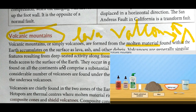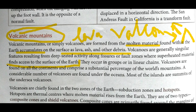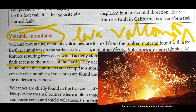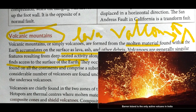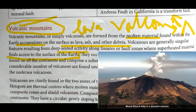Volcanoes are generally a feature resulting from deep-seated activity along fissures or fault zones where superheated material finds access to the surface of the earth. As I mentioned earlier in the fault mountain topic, faults are created when plates rise up, go down, or slide horizontally. After faults are created, the increasing temperature inside the earth gives molten material space to come out, and it flows as lava, which then composites to create a mountain.